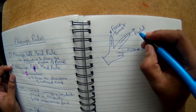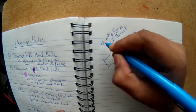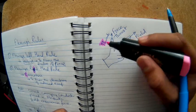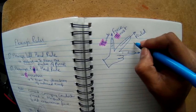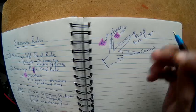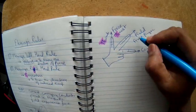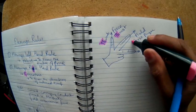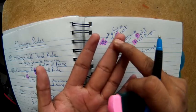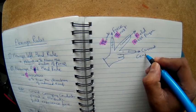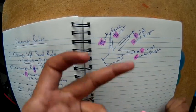Here's how to remember the finger assignments. The thumb has 'th' and so does 'thrust' — so the thumb represents thrust. The first finger starts with 'f', matching 'field.' The middle finger is the center finger of the hand, and 'center' starts with 'c', matching 'current' — so the center finger shows the direction of current.